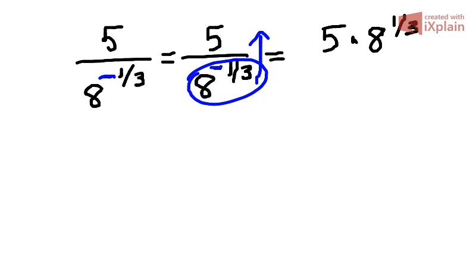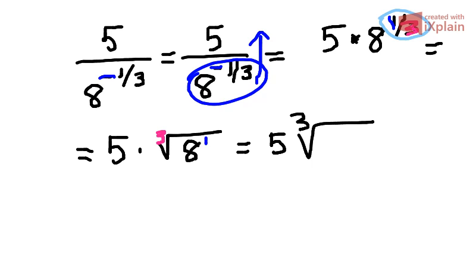So we are going to have 5 times 8 to the positive 1 third. So because they are sitting next to each other, the operation between them will be multiplication. It was a division. But now if we are reciprocating the 8 to the negative 1 third, we end up with that times in the top. So we cannot multiply 5 by 8. Priority is always the exponent. So we are going to now rewrite that exponent as a root. So 5 multiplied by the root of 8. The top number is 1, so that's the exponent. The bottom number is a 3, that's the root index. So let's write it again. 5 cubic root of 8.